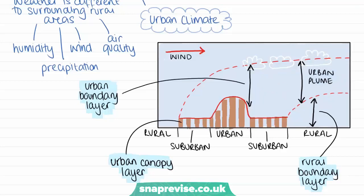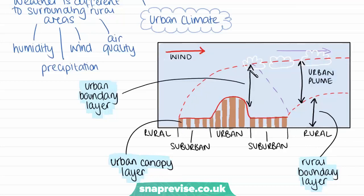The dome would typically be around this area here. Because of the direction of the wind, the wind then blows some of these climatic conditions further downwind. So we see the effect of the urban climatic dome further outside the city in the direction of the wind. Overall, you can see that there's a difference between the rural areas surrounding the city and the climatic dome, which is in the suburbs and the urban areas, with the highest point of the dome being right over the centre of the city.